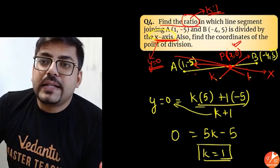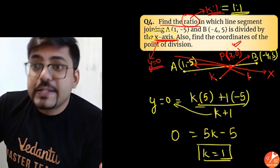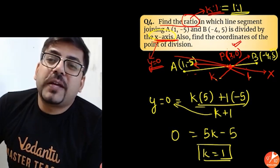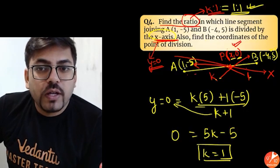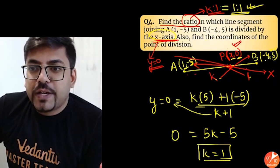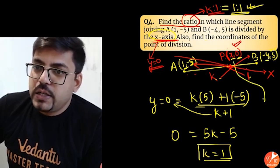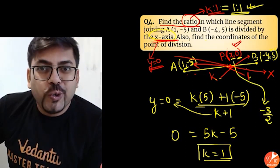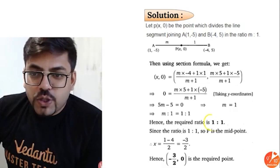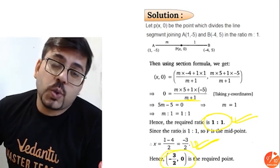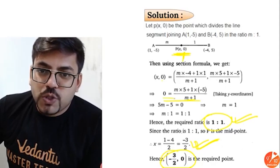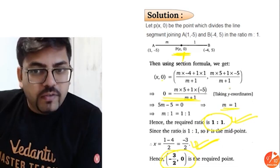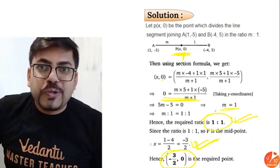Since k equals 1, this means the answer is 1 is to 1, and hence point P is the midpoint of AB. Also find the coordinates of the point of division: y is known as 0, and X will be the average of X1 and X2. So X1 is 1, X2 is minus 4, giving (1 minus 4) by 2 equals minus 3 by 2. So X equals minus 3 by 2, and the ratio is 1 is to 1 with the point of intersection at (minus 3 by 2, 0).